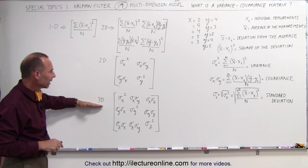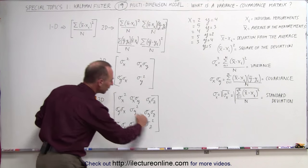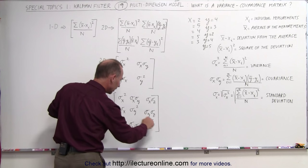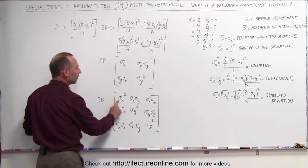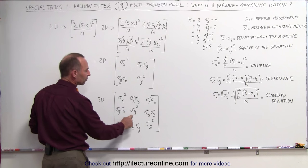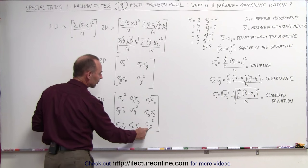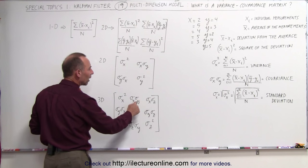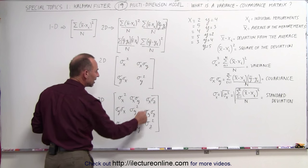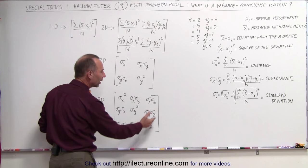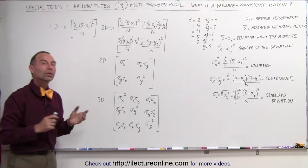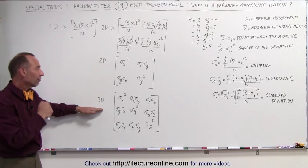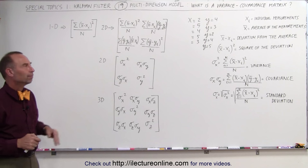For a three-dimensional matrix, notice that along the diagonal line you have the variances — the variance in the x-direction, the variance in the y-direction, and the variance in the z-direction — and then we have the covariances between x and y, x and z, and between z and y. That is what a three-dimensional covariance matrix looks like with variances and covariances in it.